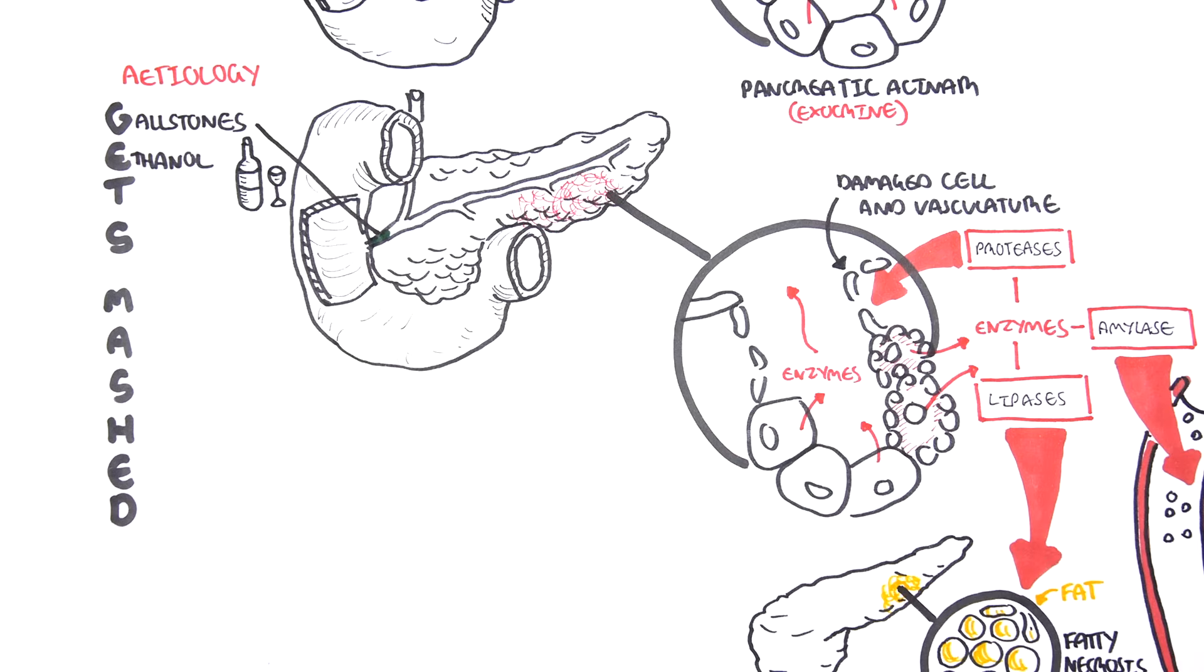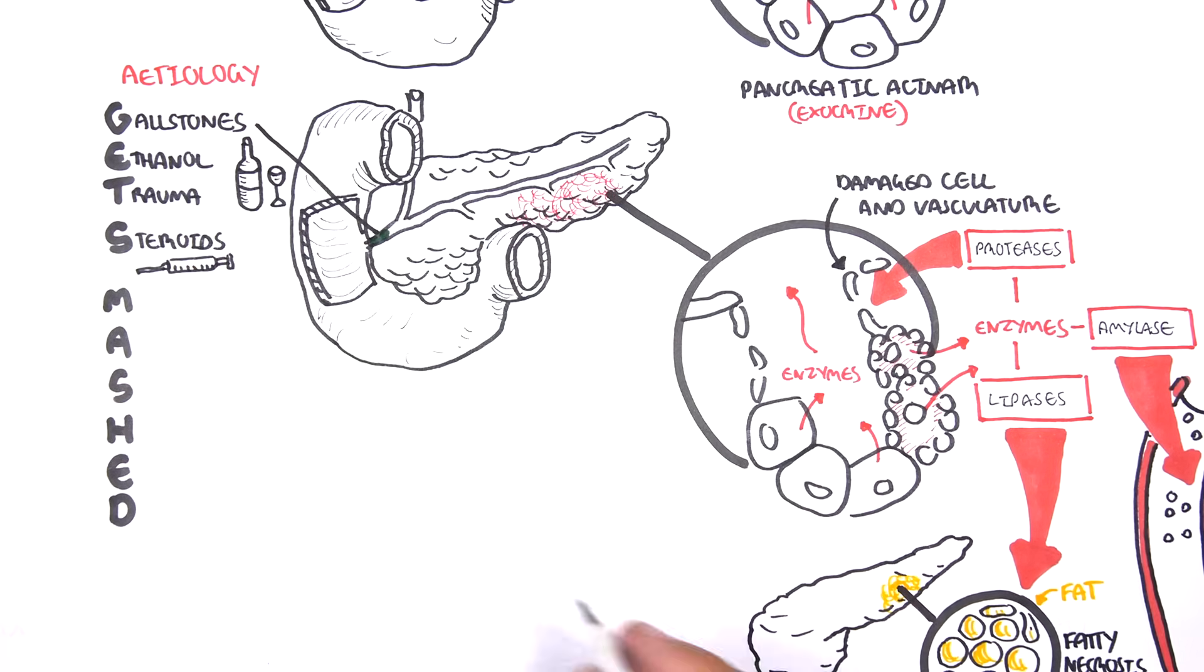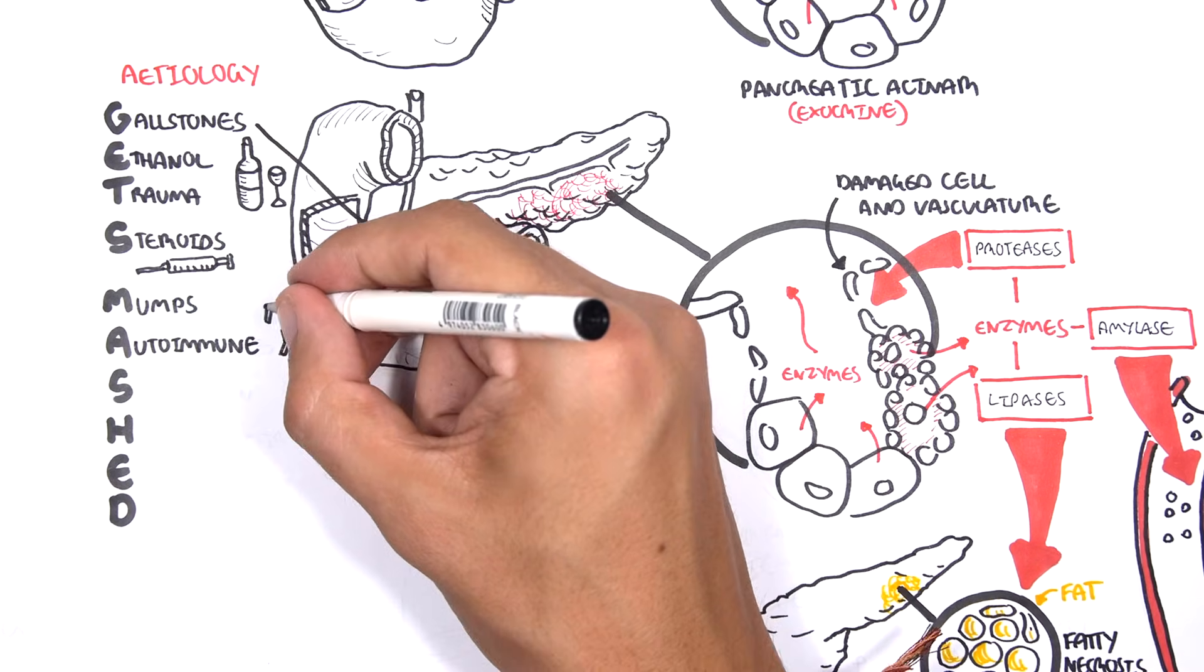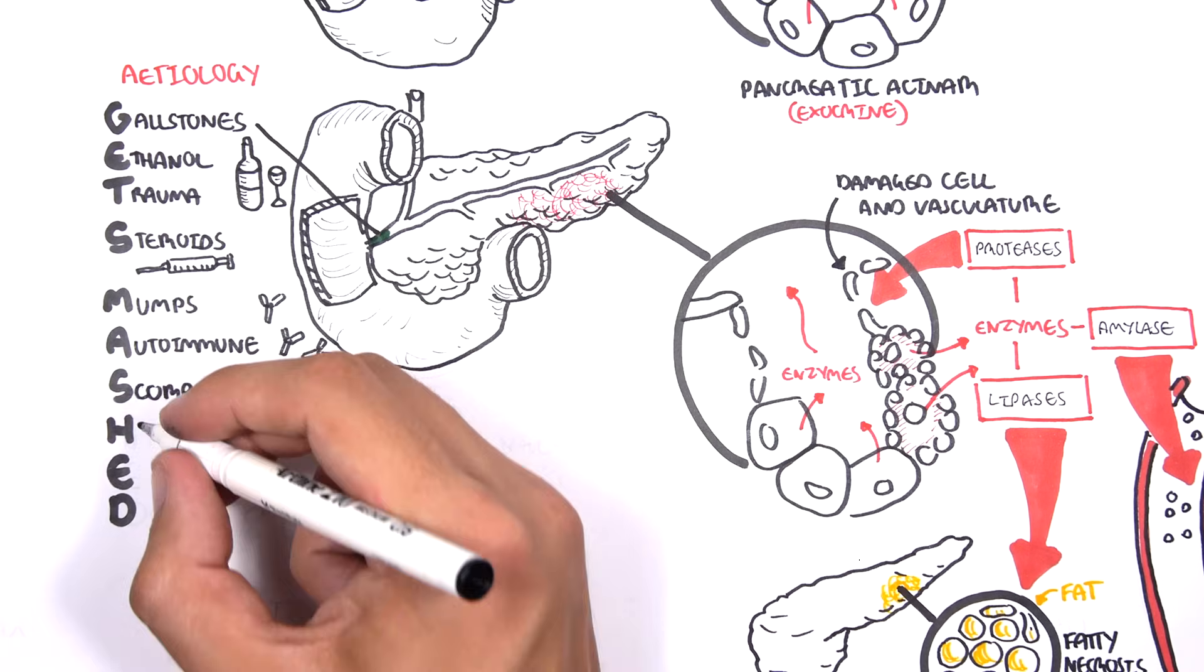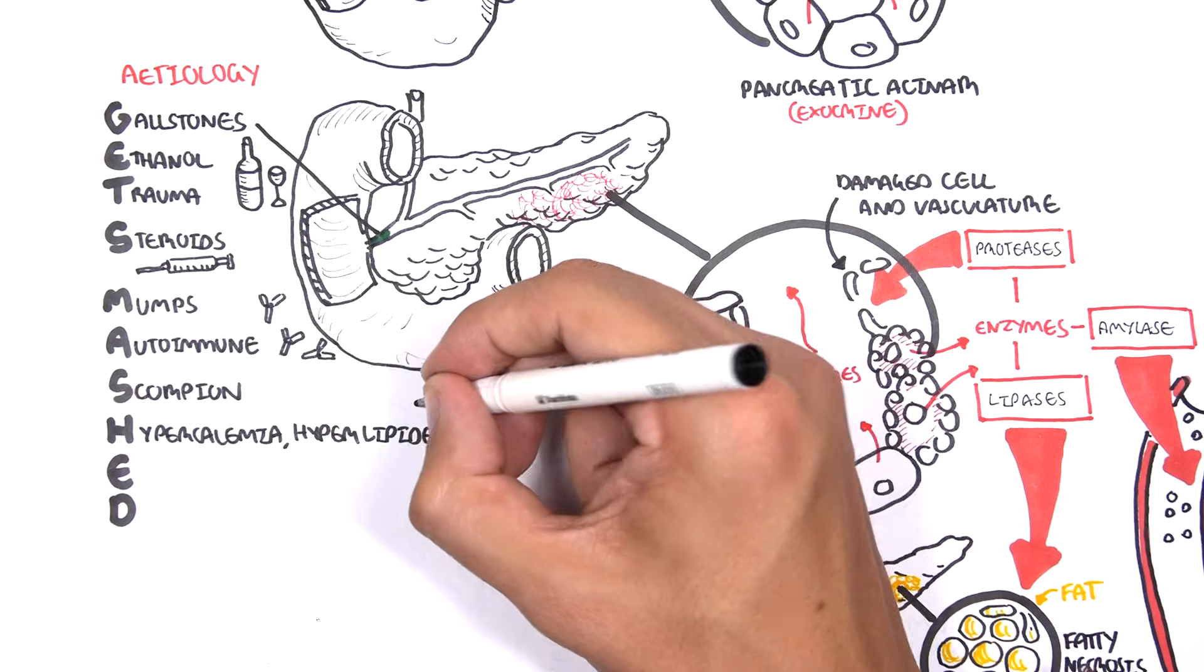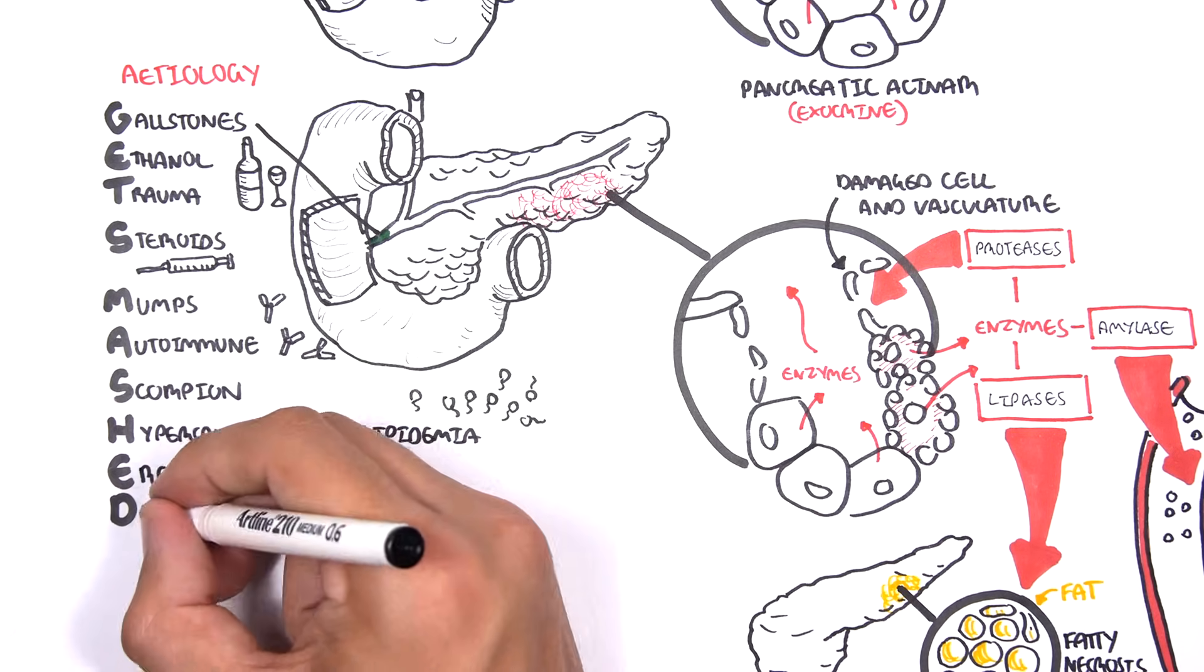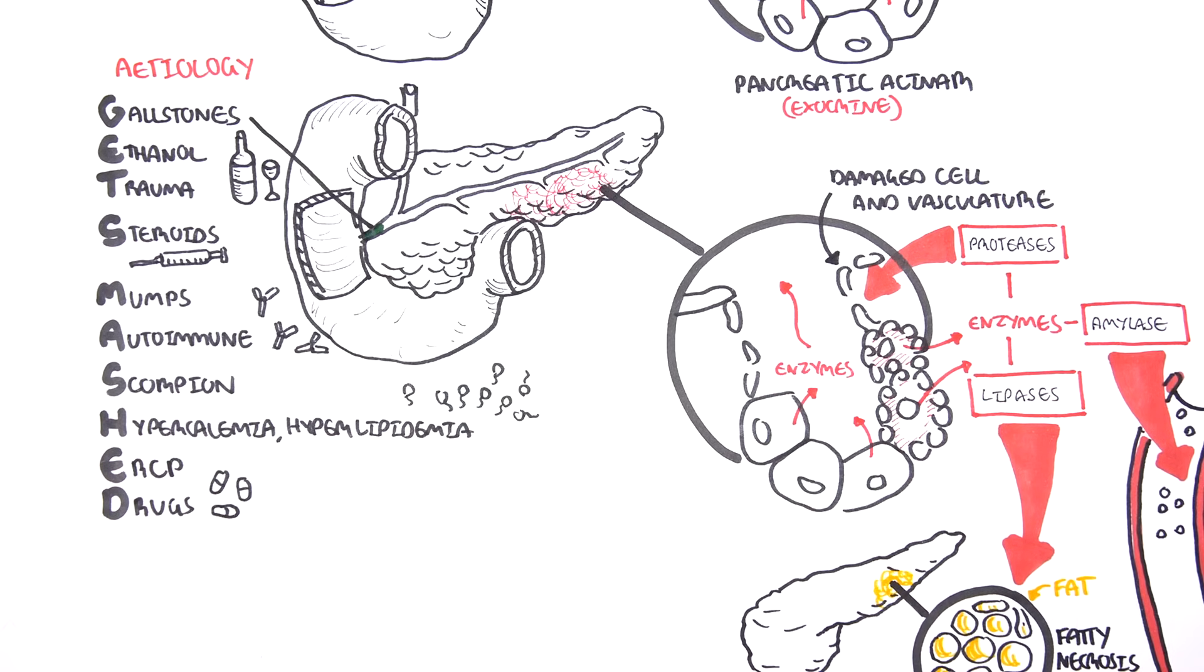Gallstones and ethanol are the two most common causes of acute pancreatitis. T is for trauma, S for anabolic steroids, M for mumps virus, A for autoimmune diseases, S for scorpion venom, H is for hypercalcemia and hyperlipidemia, E is for ERCP, which is an investigation method and treatment method used for pancreatitis. And D is for drugs, as certain medications can trigger acute pancreatitis.